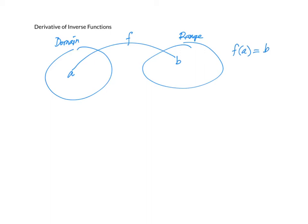To take b back to the domain, we invent an inverse function f inverse. f inverse of b takes b back into the domain. We can call the inverse function g — g is f inverse. g takes element b from the range back to the domain and produces a, so g of b equals a.